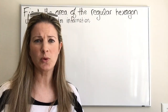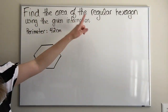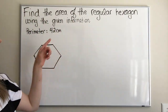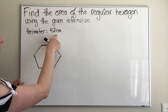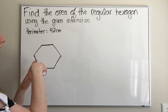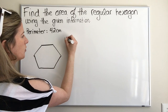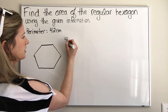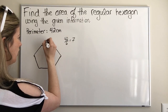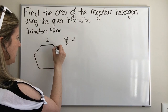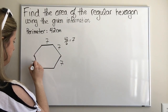So we have to do a little bit of work to start. Because it's a regular hexagon, we know that all the sides have the same measure. So if the perimeter is 42, a hexagon has six sides. We're going to do 42 divided by six, which equals seven, which means all of these sides have a length of seven.